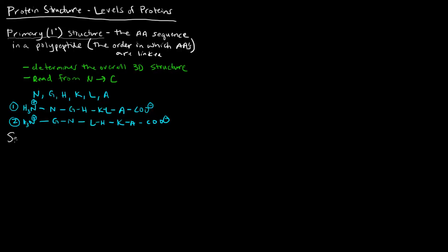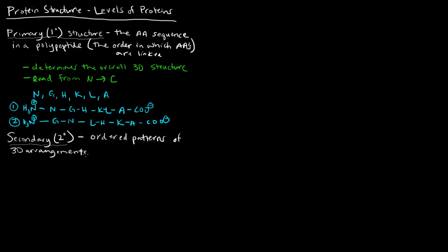Now let's talk about secondary structure. Secondary structure is, the simplest way to think about it, ordered patterns of 3D arrangements on localized regions of the backbone. Notice I'm emphasizing backbone — keeping backbone in mind will help you remember what secondary structure is all about.